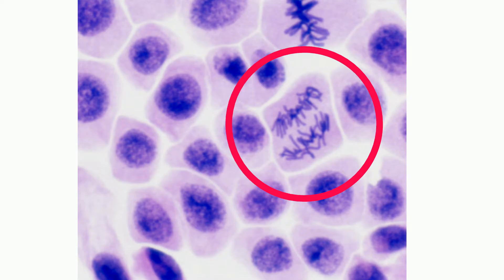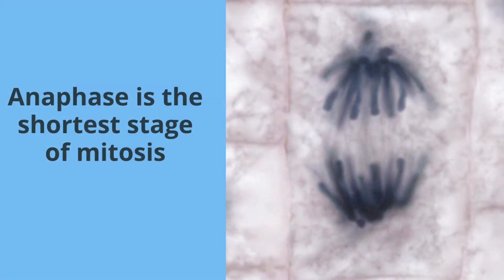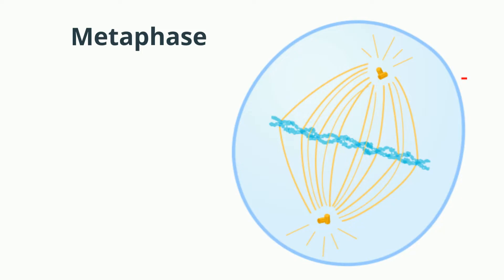Anaphase is the shortest stage of mitosis and accounts for roughly 1% of mitosis. During metaphase, the chromosomes have been aligned in the middle of the cell and spindle fibers have attached to each chromosome at the kinetochore.